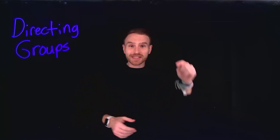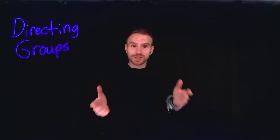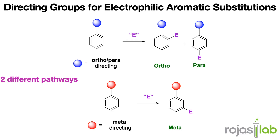Today we're learning all about directing groups in organic chemistry. When performing electrophilic aromatic substitution on monosubstituted benzenes, there are two distinct patterns of behavior.